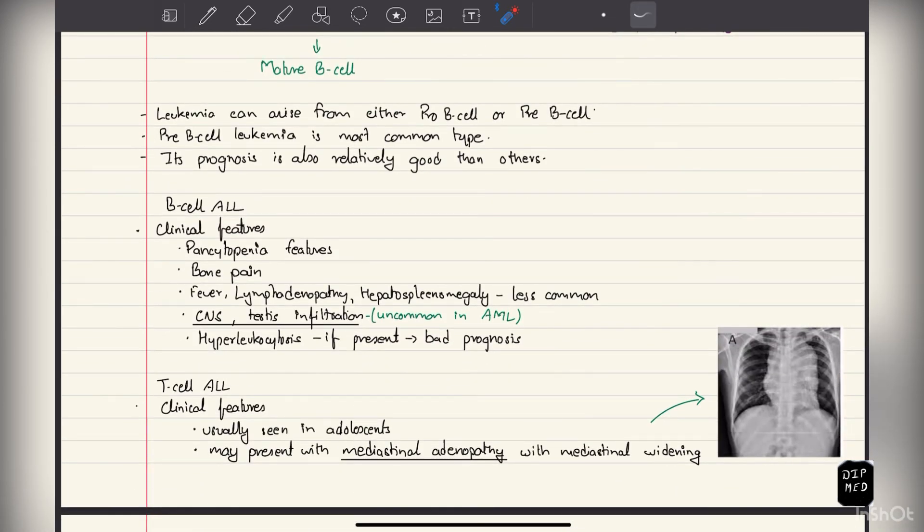Let's talk about the clinical features of B-cell ALL: they will have features of pancytopenia—anemia, thrombocytopenia, and neutropenia. There will be bone pain, fever, lymphadenopathy, and hepatosplenomegaly. CNS and testis infiltration can be seen, which is unlikely in AML. Hyperleukocytosis, if present, suggests bad prognosis.